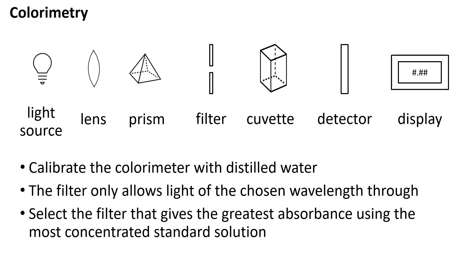The colourimeter must be calibrated to give an absorbance reading of zero when distilled water is in the cuvette. The filter only allows light of a certain wavelength to pass through. The filter that you choose depends on the colour of the solution that you are analysing. Select the filter that gives the greatest absorbance value with the most concentrated solution that you are testing. Double check that distilled water gives an absorbance of zero at this wavelength.